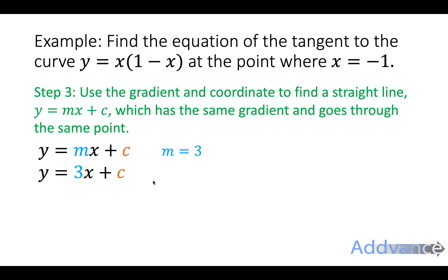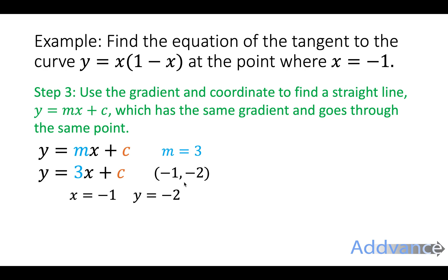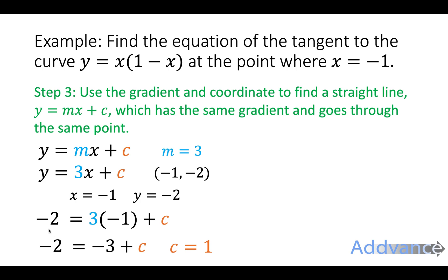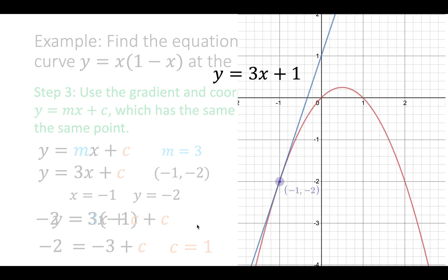Step three: use the gradient and the coordinate to find the straight line y = mx + c. We know the gradient is 3, so m = 3, giving y = 3x + c. We substitute in the coordinates (−1, −2): so x = −1 and y = −2 go into y = 3x + c. Three times −1 is −3; rearranging by adding 3 to both sides gives c = 1. So the equation of the tangent is y = 3x + 1. The blue line shown has a gradient of 3, crosses the y-axis at 1, and is a perfect tangent to the curve at that point.